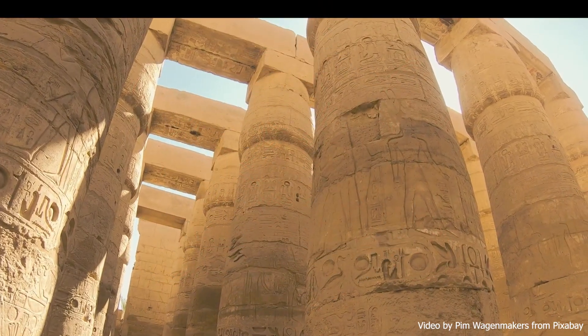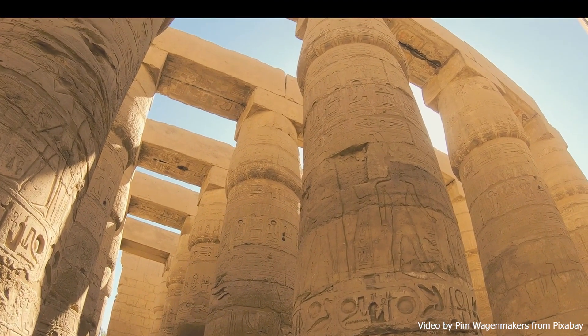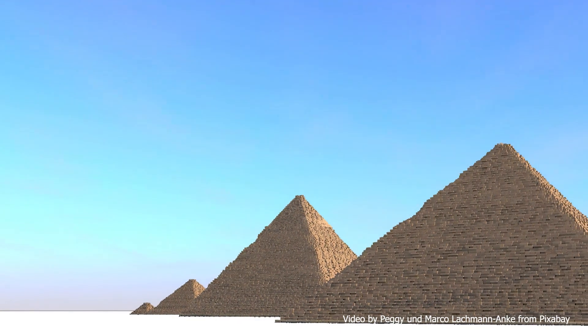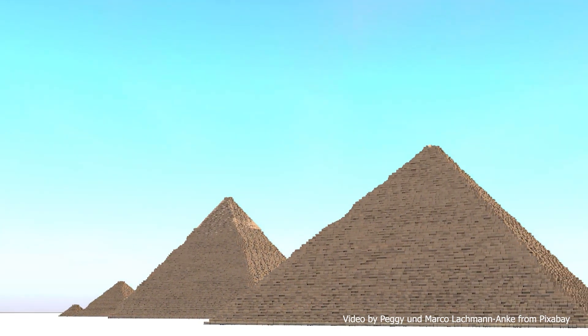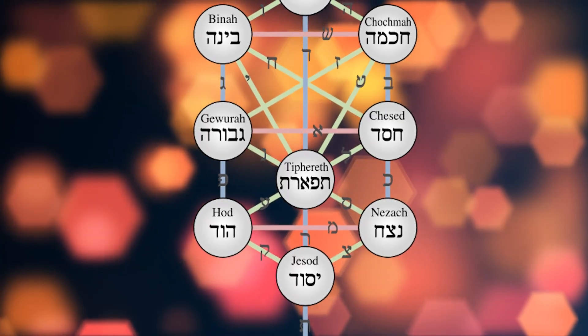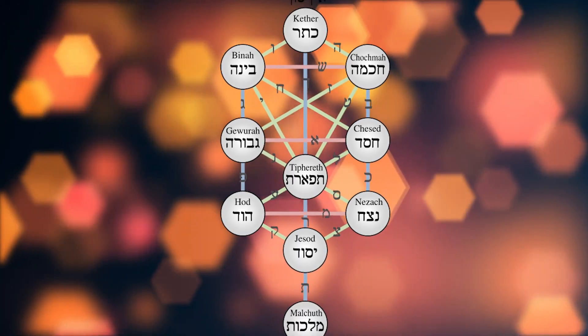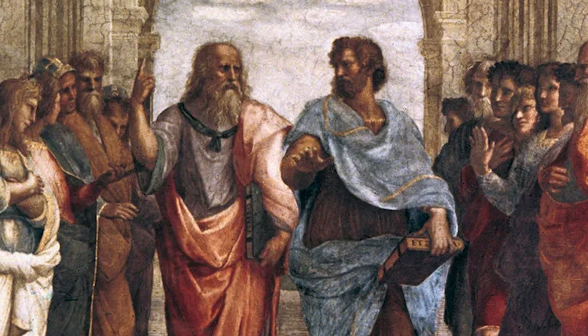The origins of Metatron's cube can be traced back to ancient civilizations, including the Egyptians who used sacred geometry in their architecture and art. The cube also has connections to the Kabbalah, a mystic tradition within Judaism, and the teachings of Greek philosopher Plato.